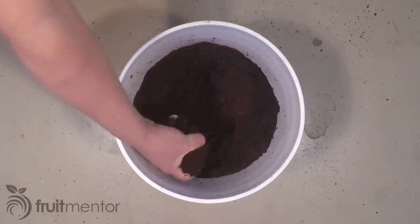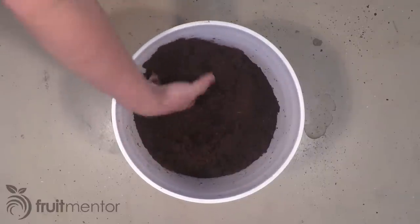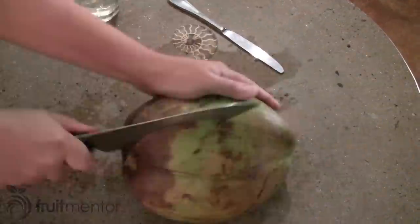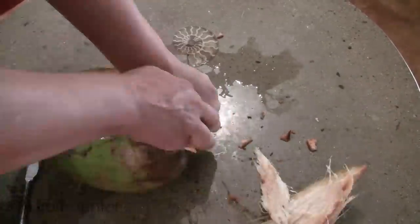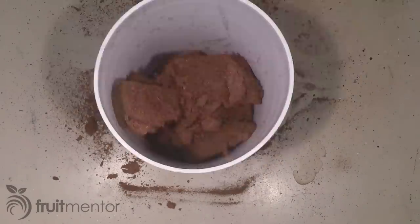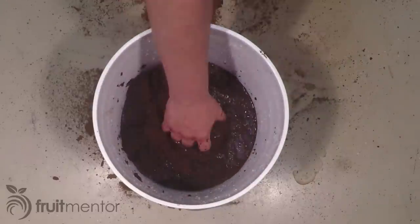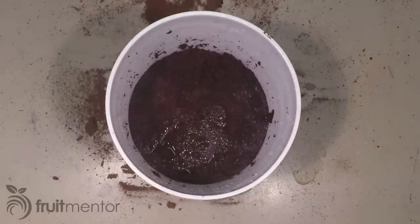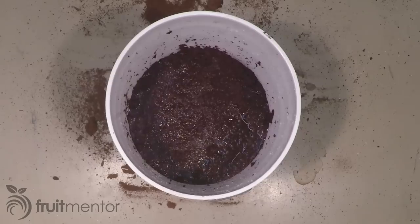Coconut coir is the ideal rooting medium for citrus. Coconut coir is a recycled waste product made from coconut husks. It comes in dry bricks that are expanded by adding water. It works well for rooting because of its ability to retain a large amount of water.